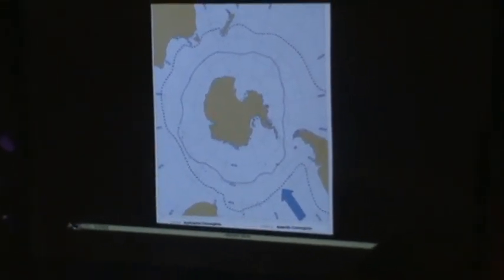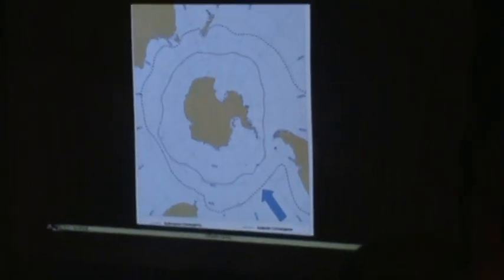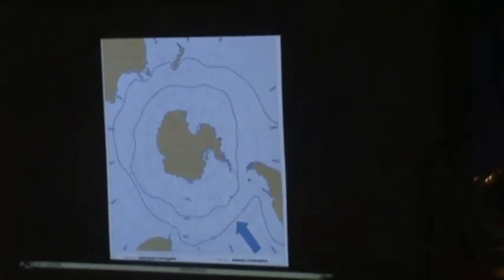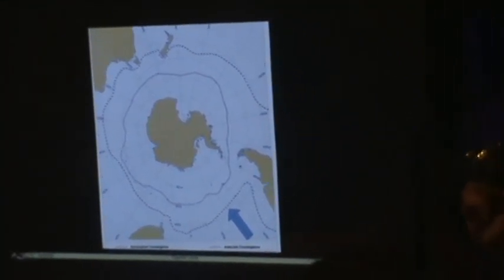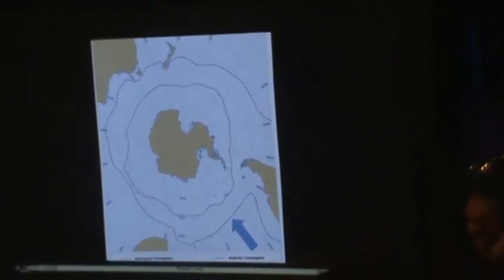And north, there's another oceanographic boundary. This is called the Subtropical Convergence. And again, colder water to the south, but not really mixing with the warmer water to the north.